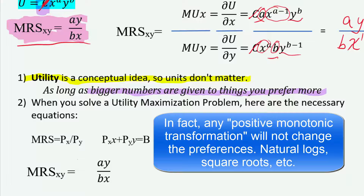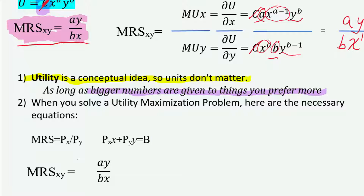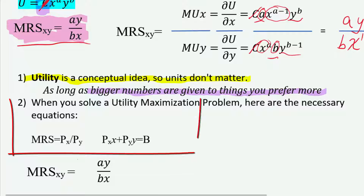So instead of calling one util, we could call it a million utils. As long as we consistently transform that, it doesn't matter. When you solve a utility maximization problem, here are the two equations that matter.